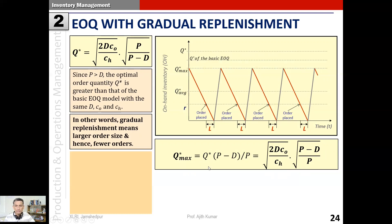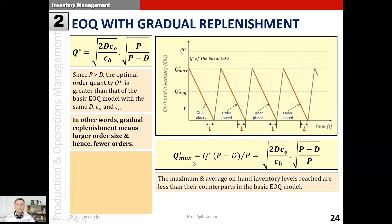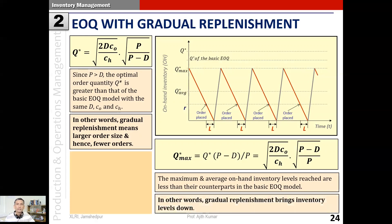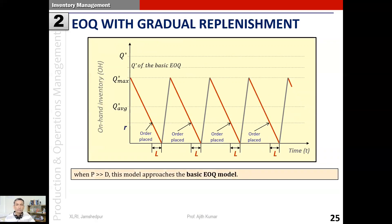The factor (p minus d)/p is always less than one since p minus d is always less than p. Therefore the maximum inventory level reached will be less than that in the basic EOQ model. The maximum as well as the average on-hand inventory will both be lower. This means that the gradual replenishment approach brings down the overall inventory level in the system.